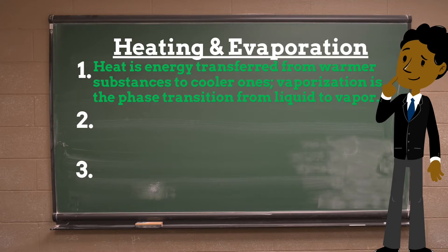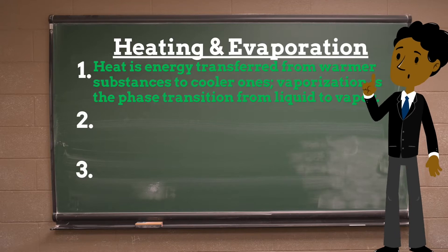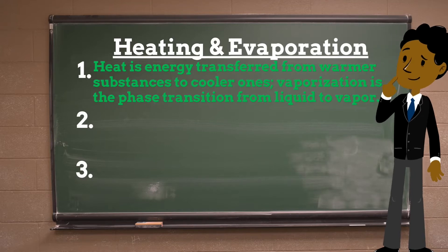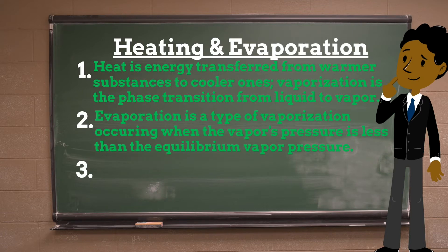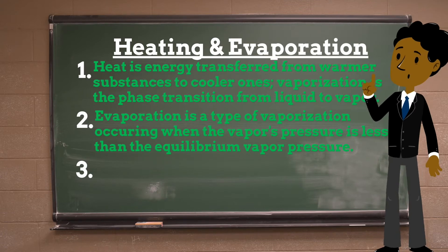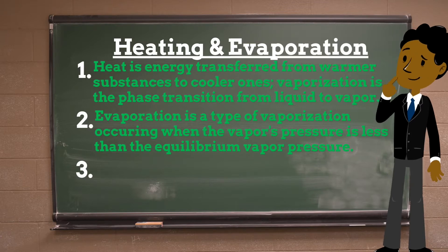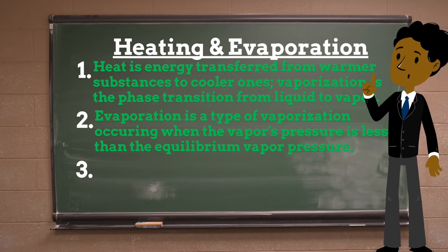Vaporization of an element or compound is a phase transition from the liquid phase to vapor. There are two types of vaporization: evaporation and boiling. Evaporation is a surface phenomenon whereas boiling is a bulk phenomenon. Evaporation is a phase transition from the liquid phase to vapor that occurs at temperatures below the boiling temperature at a given pressure, and only occurs when the partial pressure of vapor of a substance is less than the equilibrium vapor pressure.